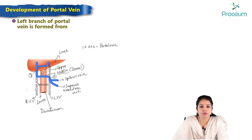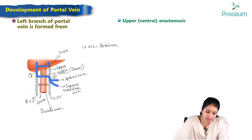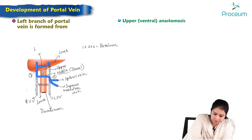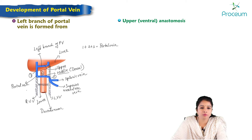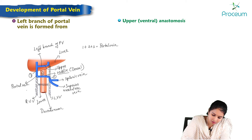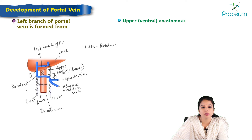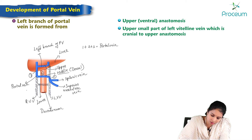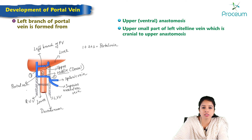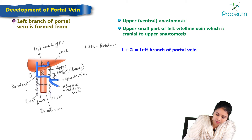The left branch of the portal vein is formed from the upper ventral anastomosis along with the upper small part of the left vitelline vein. So combining these two components — referred to as part 1 and part 2 in this context — forms the left branch of the portal vein.